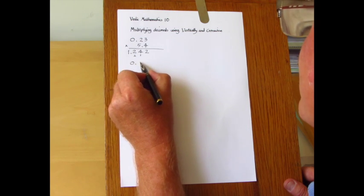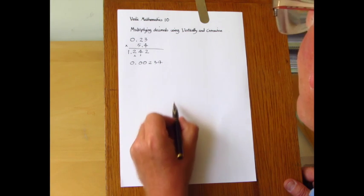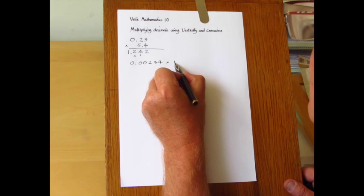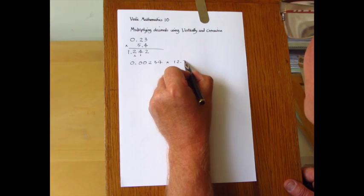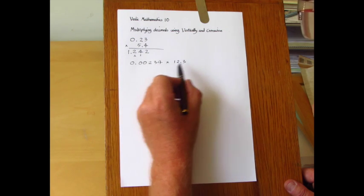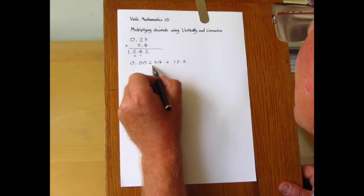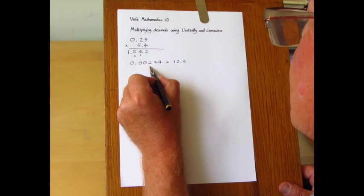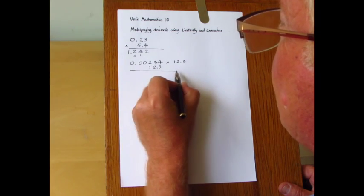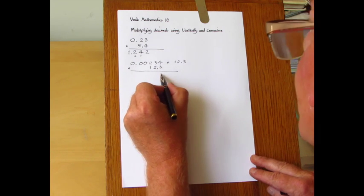And again, if you have, let's take another example of 0.00234 multiplied by 12.3. Again, I'm going to place these two numbers so that it suits the vertical and crosswise pattern, so I'll place the 12.3 below here, 12.3.